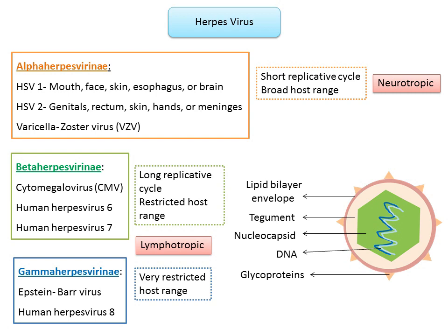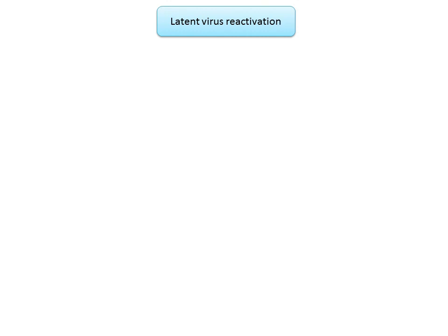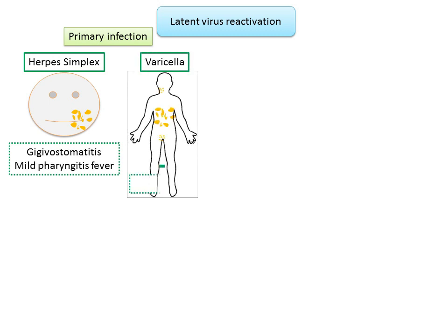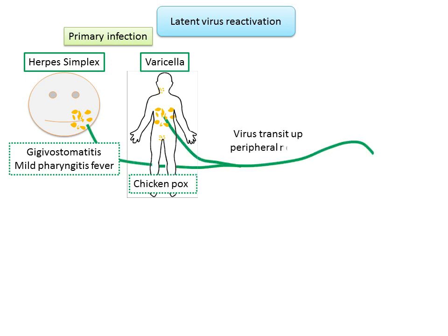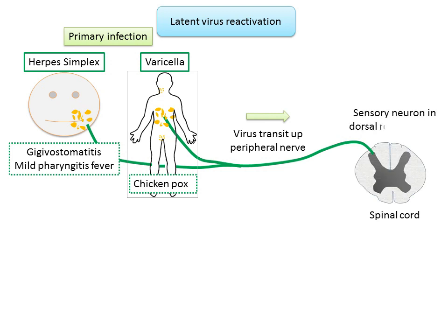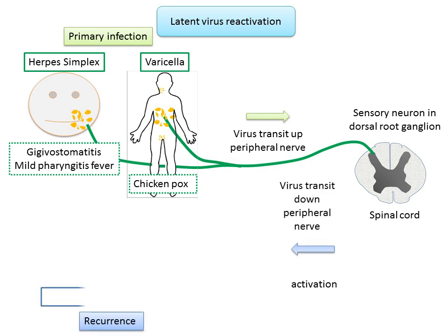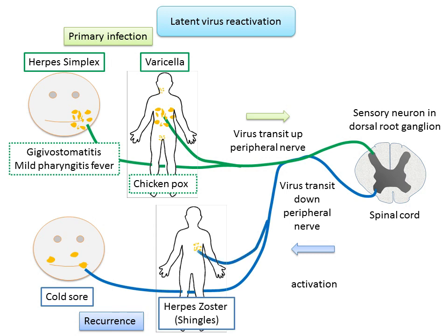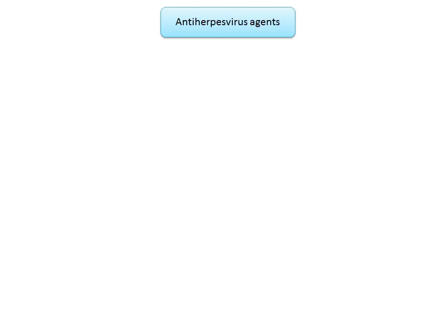An important property of herpes viruses is their ability to establish latent infections. The primary infection of herpes simplex causes gingivostomatitis and mild pharyngitis with fever; varicella causes chicken pox. The virus then transits up the peripheral nerve to the sensory neuron in the dorsal root ganglion. Upon reactivation due to stress, the virus transits back down the peripheral nerve and can cause recurrences such as herpes zoster or shingles and cold sores.